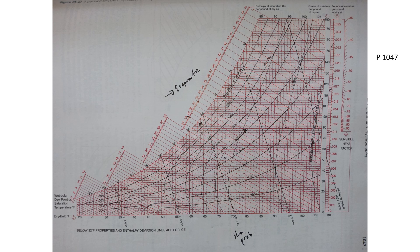On page 1047, you will definitely get at least one question from the psychrometric chart. There is a separate video that goes through it in detail. You're not allowed to bring a separate chart in, but there's one here you can use. On page 1048, it actually tells you how to plot the chart — wet bulb is diagonal, dry bulb is vertical, and relative humidity follows the curved lines. That reference can save you.